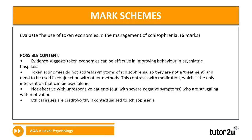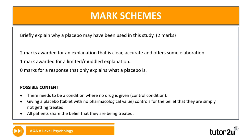Briefly explain why a placebo was used in this study — two marks. The key point is being study-specific. There needs to be a condition where no drug is given — a control condition. Giving a placebo controls for the belief that participants are simply not getting treated, so all patients share the belief that they are being treated. Make sure you are study-specific when answering.